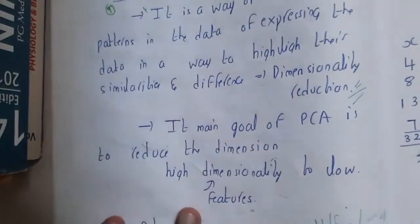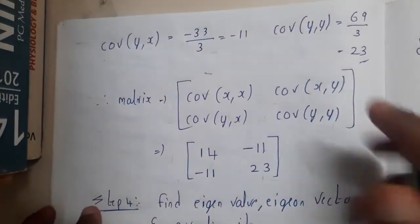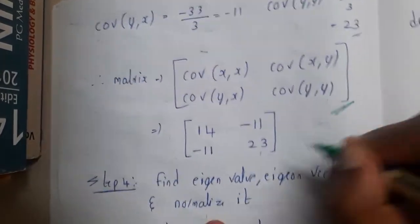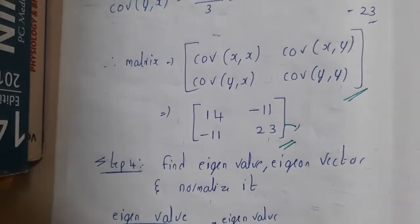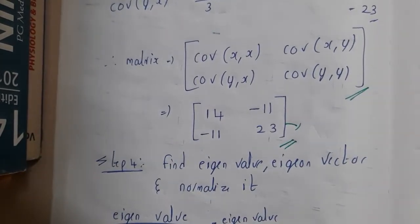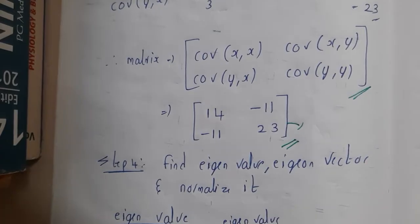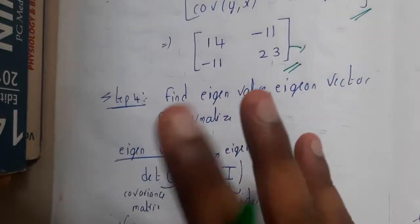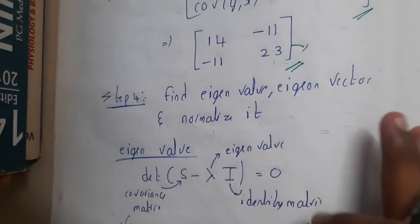Remember: both off-diagonal values will always be the same, so you can just write the same values. Once you solve them you write the covariance matrix. Then you will find the eigenvalues, eigenvectors, and normalize the values.